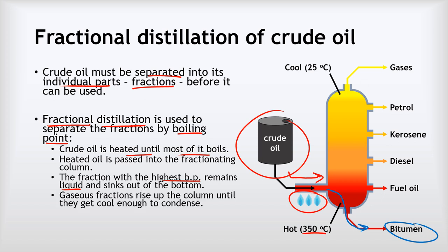The gaseous fractions — the ones that have been heated above their boiling points — will actually rise up the column, and as they move up they'll cool down. They'll keep rising until the point that they get cool enough to condense, and at that point they're separated out of the column at different levels. So we've got the substances that condense at the highest temperatures near the bottom, like fuel oil and diesel, and the fractions that condense at the lowest temperatures — those with the lowest boiling points — coming out near the top, like petrol. The gases never get cold enough to condense and come out of the top still as a gas.